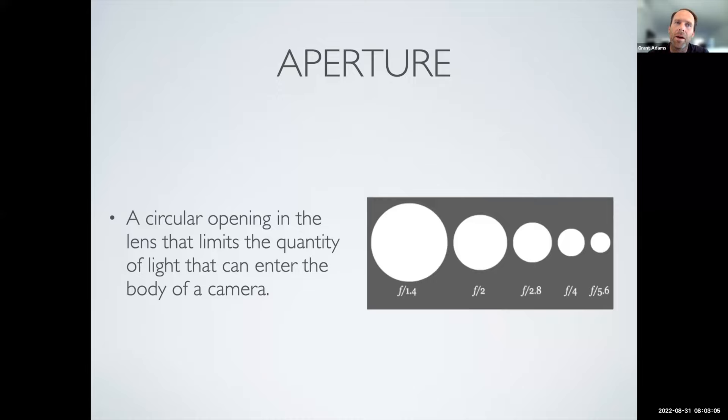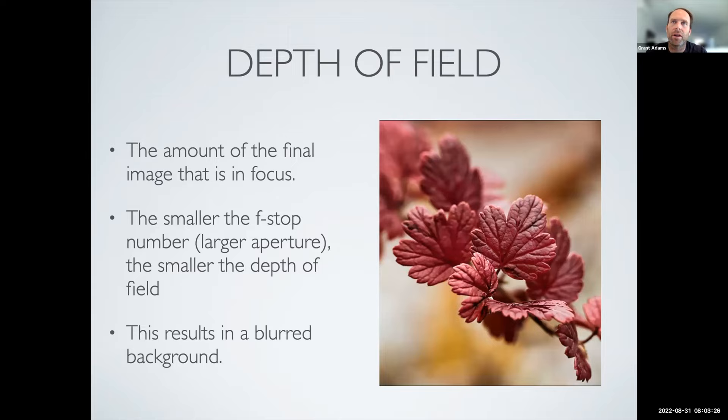Aperture is the circular opening in the lens that limits the quantity of light coming into the camera body. It's how big or small that opening is. The depth of field is the amount of your image that's in final focus. Generally speaking, the larger the aperture — the more light that gets in at once — the shallower the depth of field will be.